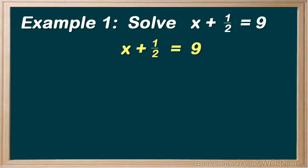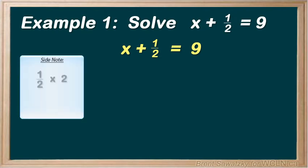How could we get rid of the fractions? Well, we know that if we multiply 1 half by 2, the 2's would cancel, and we're left with 1. No more fractions.